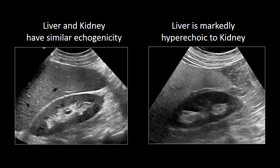We can also use the kidney's echogenicity as an internal reference. The kidney and liver should have similar echogenicity, or the kidney should just be slightly darker than the liver. When the liver becomes steatotic, it becomes increased in echogenicity, and the kidney will appear very dark or hypoechoic relative to the hyperechoic liver.